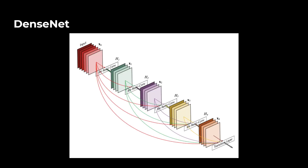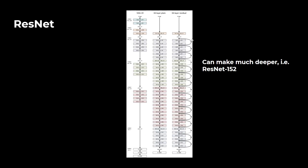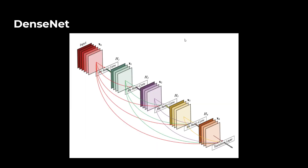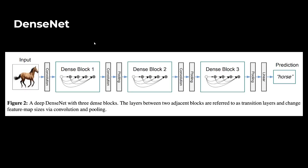DenseNet takes ResNet further — instead of passing features only one step forward, DenseNet passes features to every subsequent layer. You combine all features from all previous layers, because features learned at an earlier layer may be very useful later on. The trade-off is that DenseNets can be complex and memory-intensive due to all those feed-forward connections. An example DenseNet with three dense blocks can be used for object detection tasks.